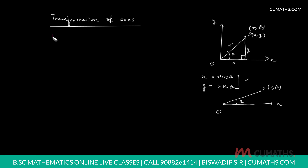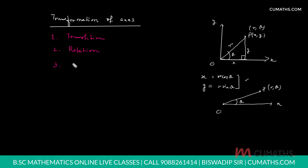In transformation of axes, there are mainly three types of transformation in two-dimensional geometry. We are not talking about three-dimensional geometry; we are talking about two-dimensional geometry. The first transformation is translation. The second is rotation. The third one is translation followed by rotation, which is popularly known as rigid body motion.